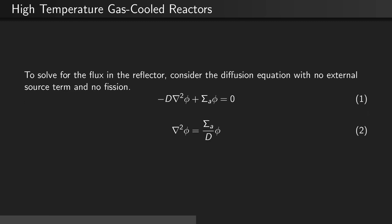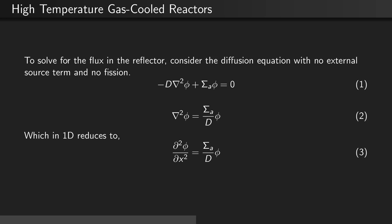We can rearrange this to say that the Laplacian of the flux is equal to the absorption cross-section divided by the diffusion coefficient multiplied by the flux. In one dimension, this reduces to the second partial derivative of the flux with respect to x equals sigma a over d times phi.